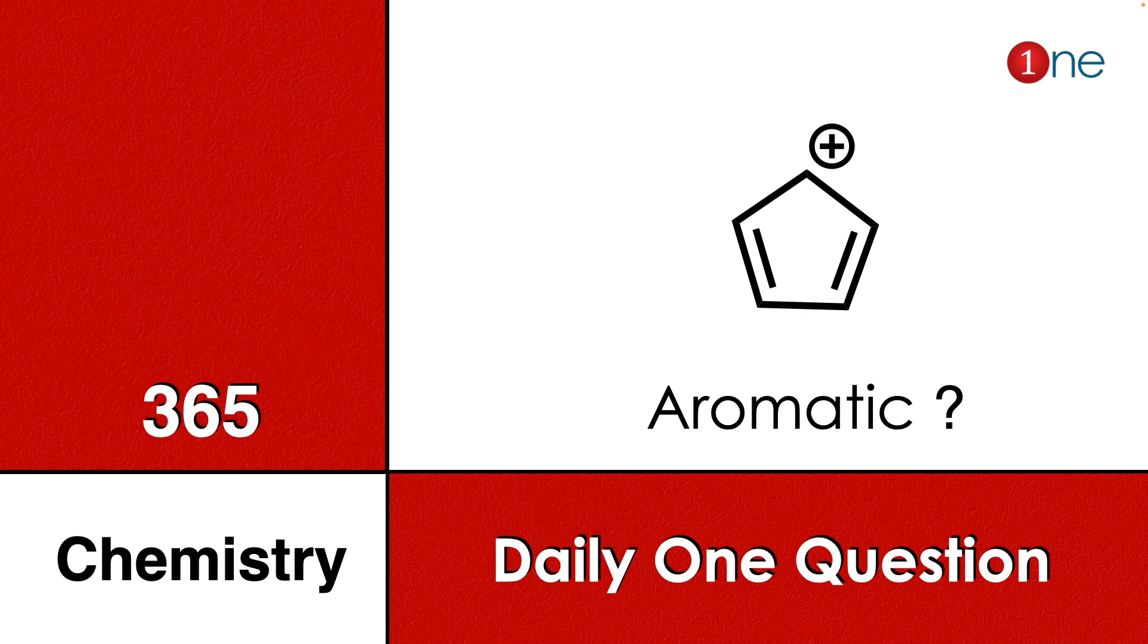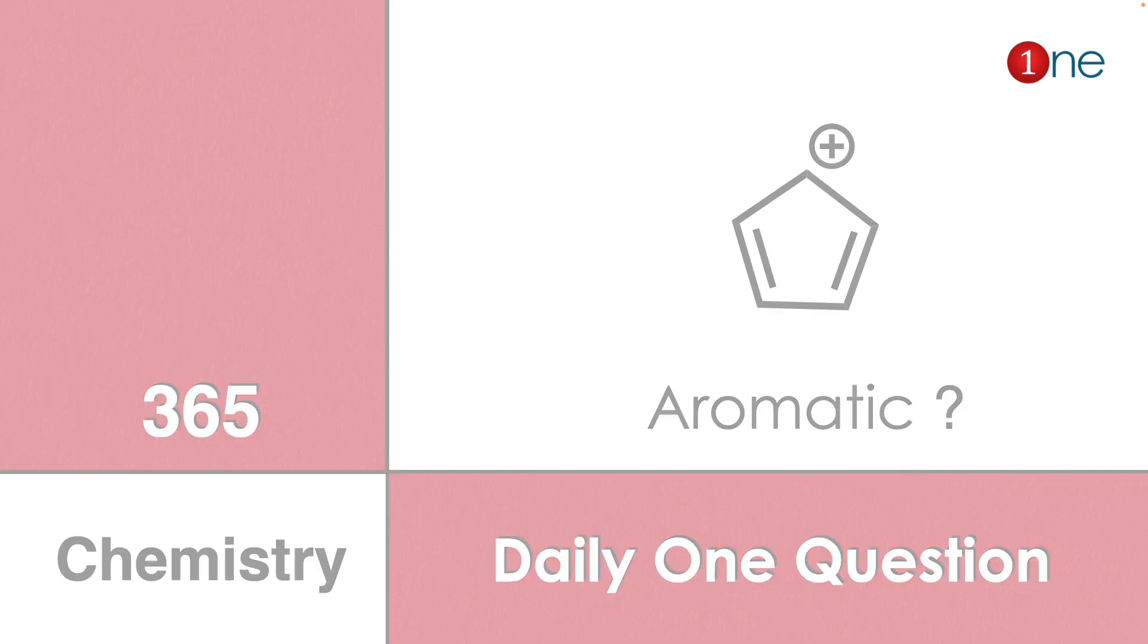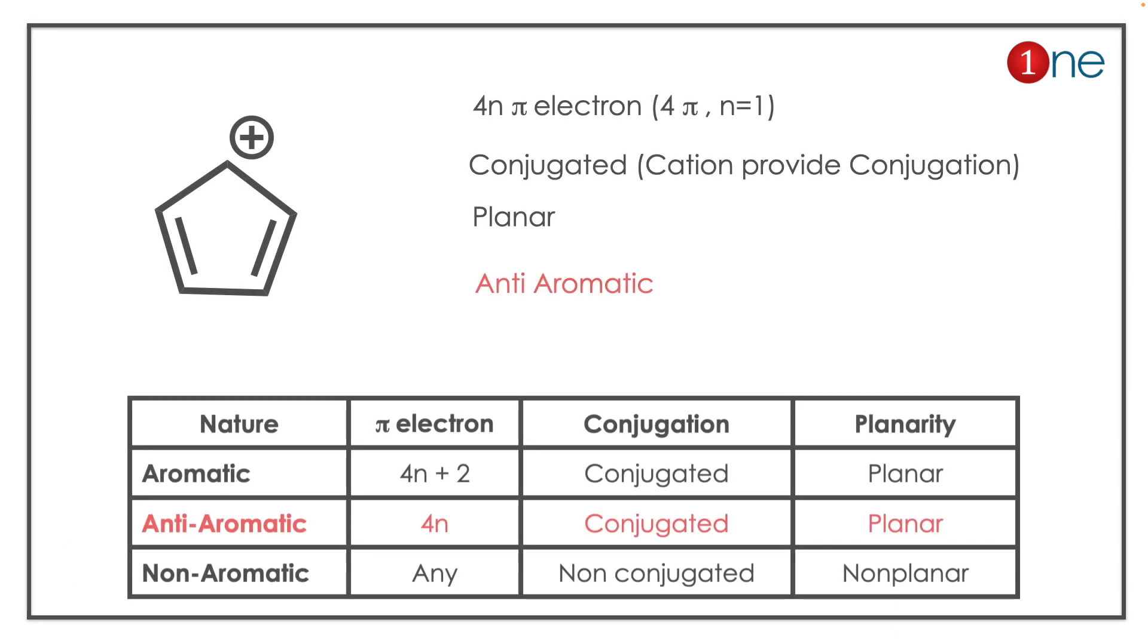Welcome to One Chemistry 365 chemistry series daily one question. Here we are given a five-member system which is a conjugated double bond with a cation. You have to find whether the system is aromatic or not.